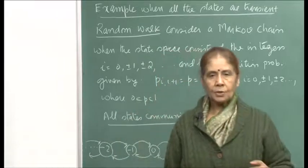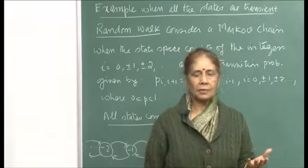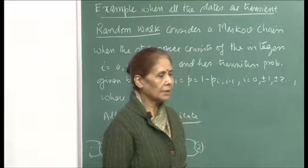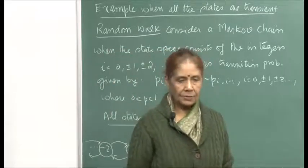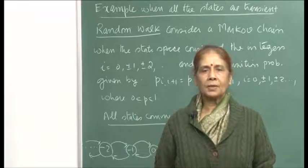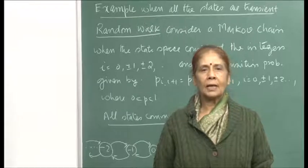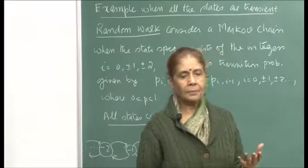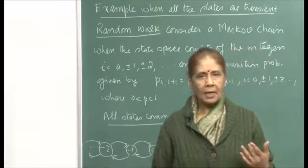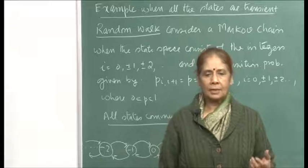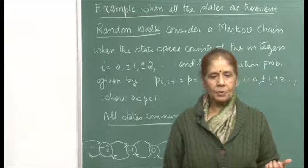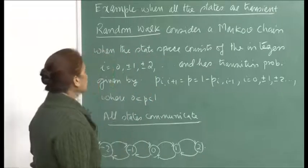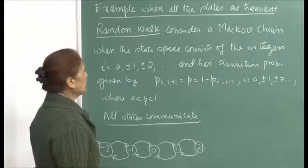In the last lecture, I told you that if the number of states of a Markov process are finite, then all states cannot be transient. We argued that if the system has to go on, since transient states will be visited only a finite number of times, the process must come to an end in finite time. But this argument does not hold when the number of states is infinite. So I will give you an example where all states of the process may be transient.